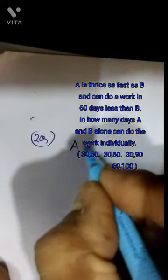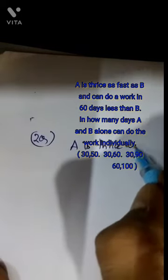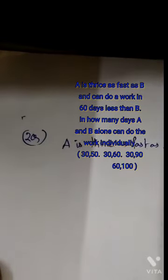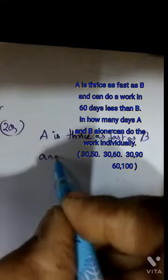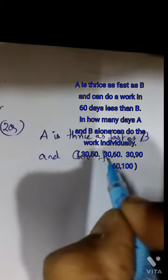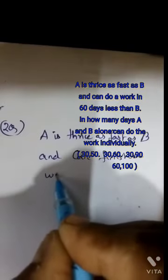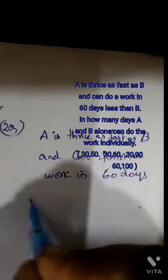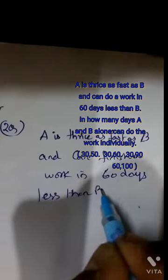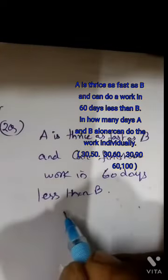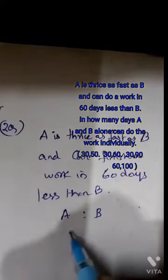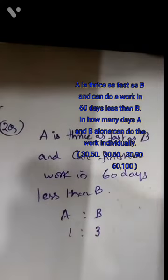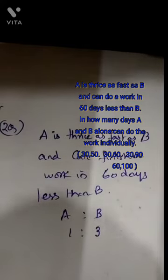Second question: A is thrice as fast as B. Because A is thrice as fast as B, the first step is A is to B ratio. It is not 3 is to 1 — it is 1 is to 3. If B does it in 30 days, A will do it in 10 days because A is 3 times faster. This is the efficiency ratio. The inverse of efficiency gives you the time taken ratio.